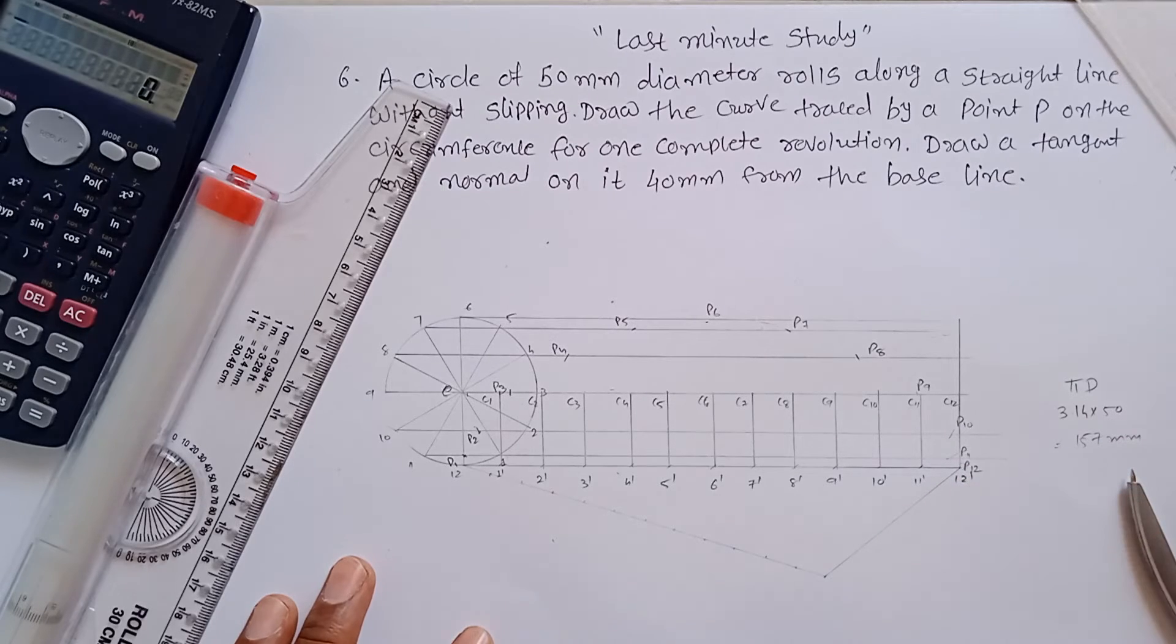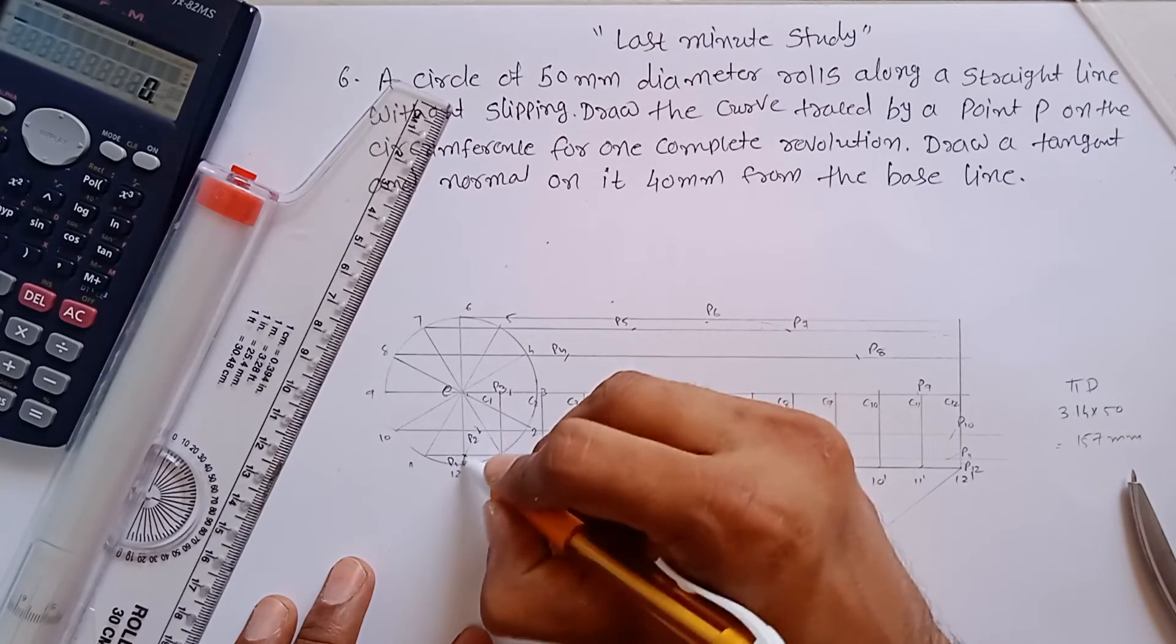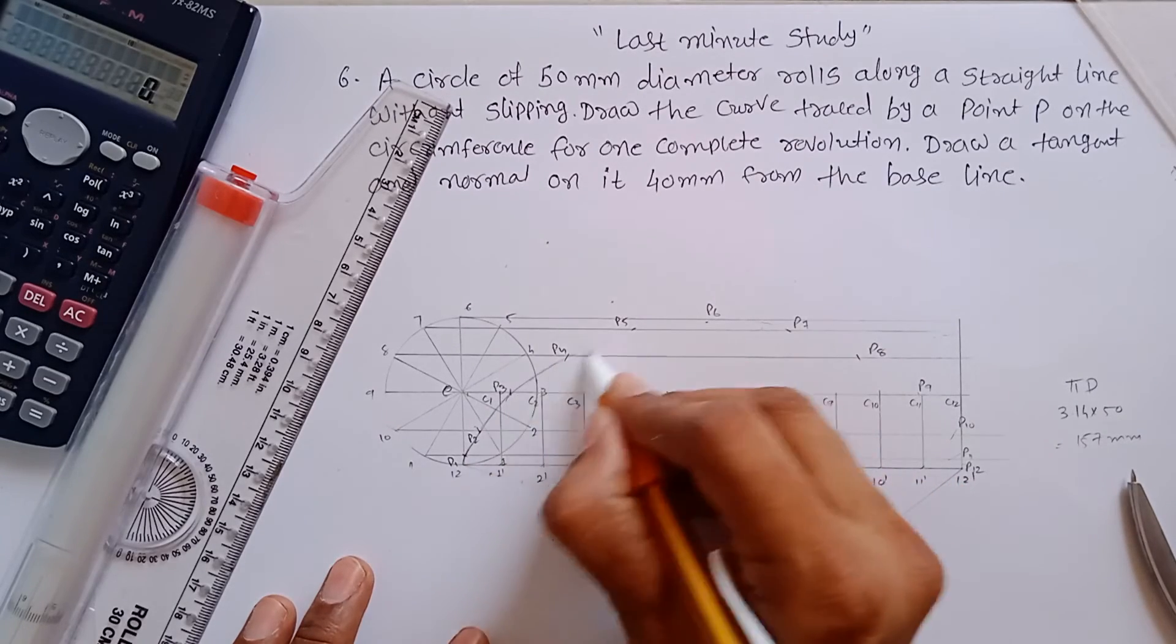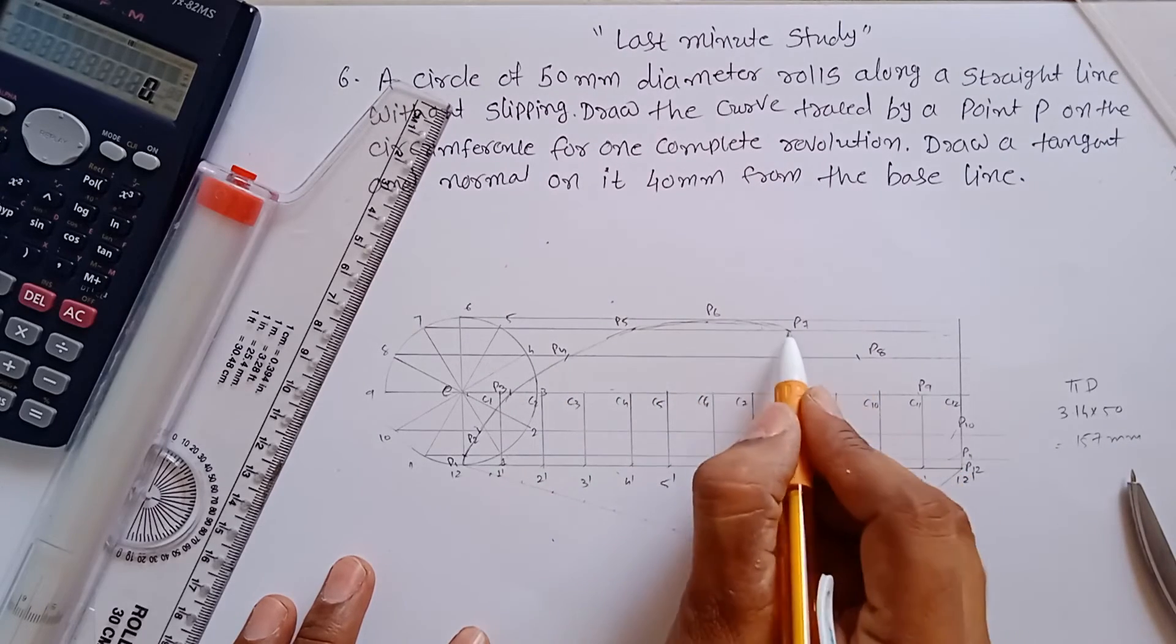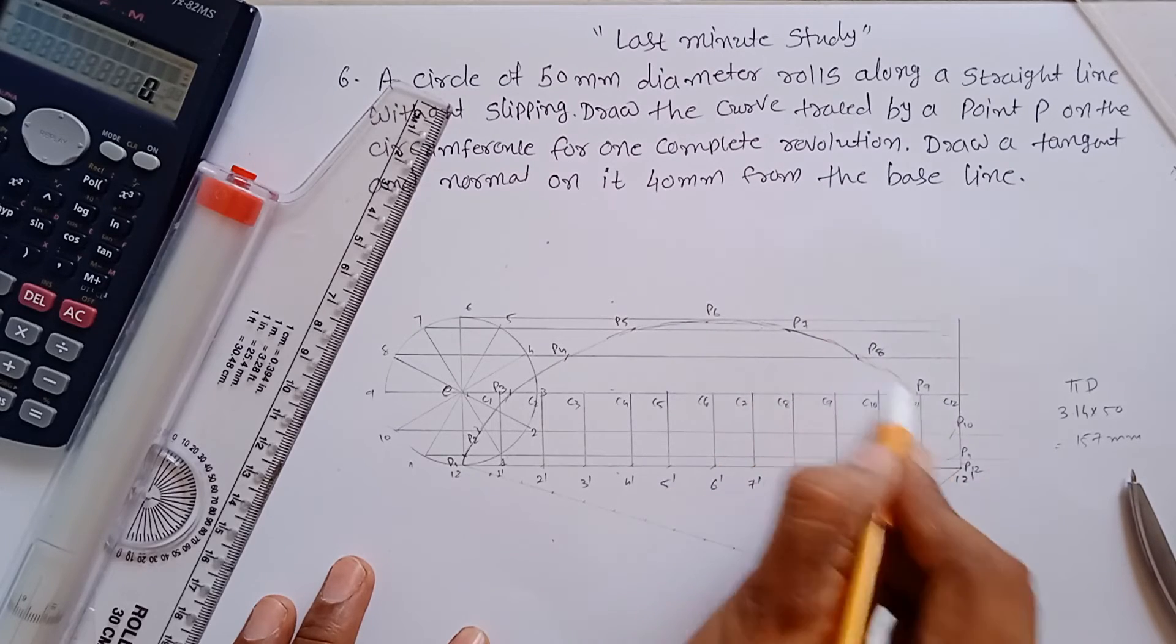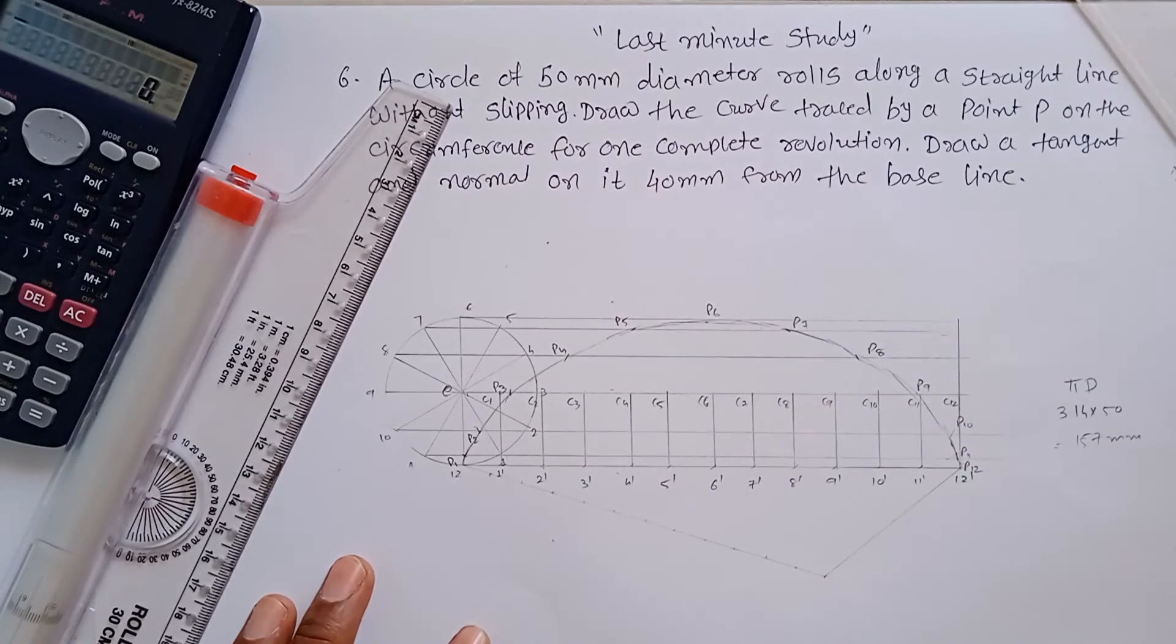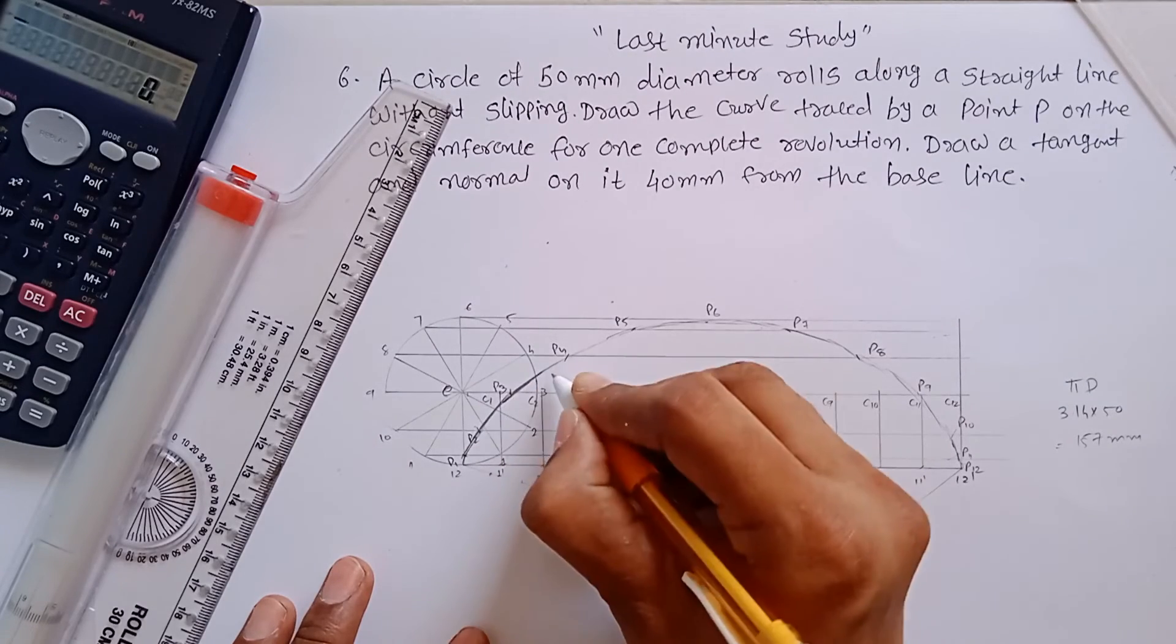Now join all the points with the free hand, with a smooth curve. Draw something like this, and again redraw it with the dark line.